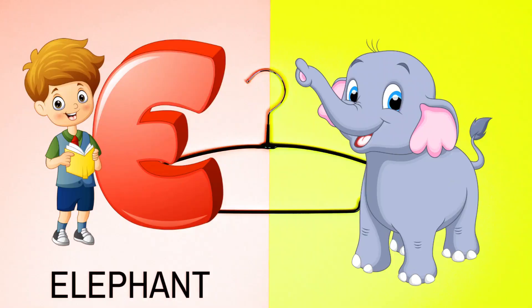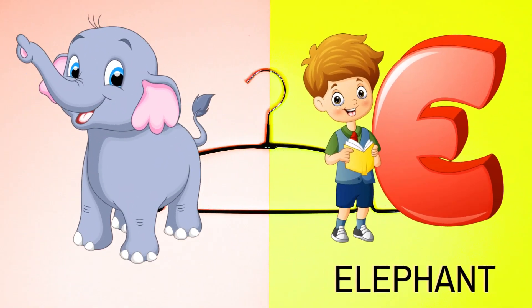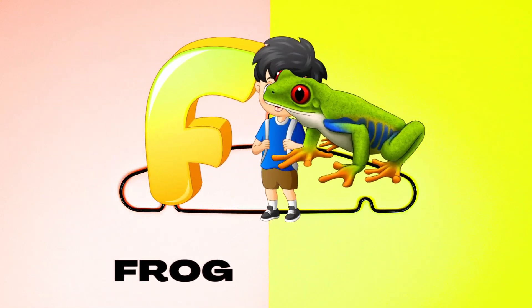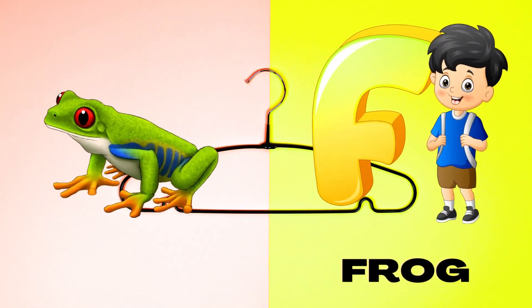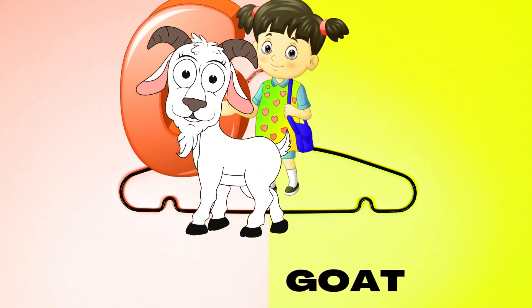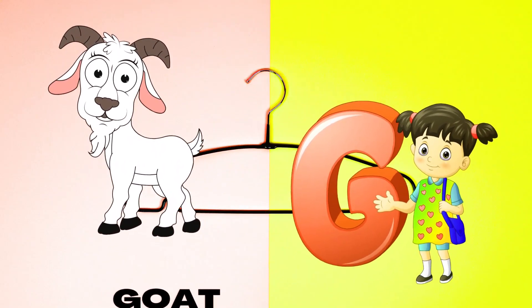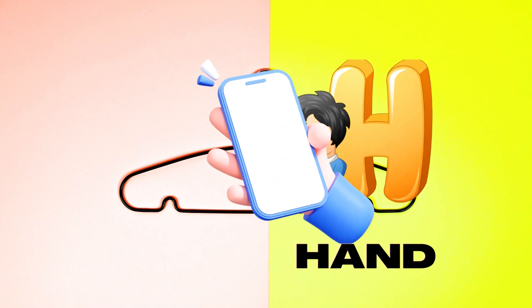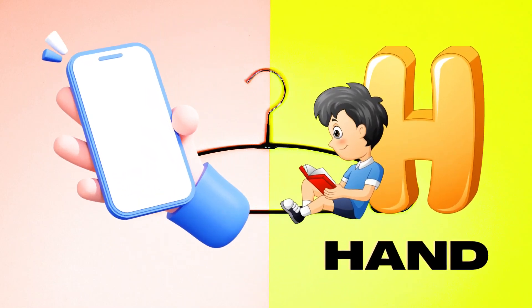E is for Elephant, E-E-Elephant. F is for Frog, F-F-Frog. G is for Goat, G-G-Goat. H is for Hand, H-H-H-Hand.